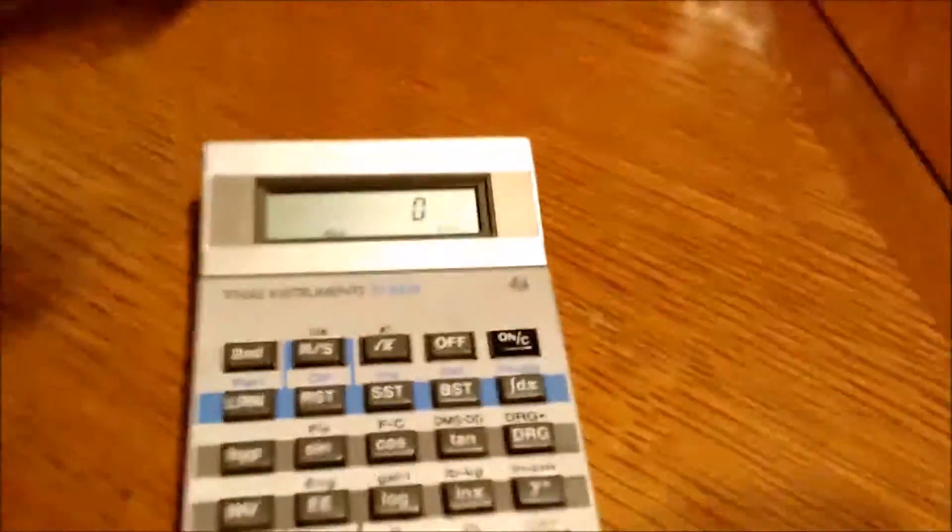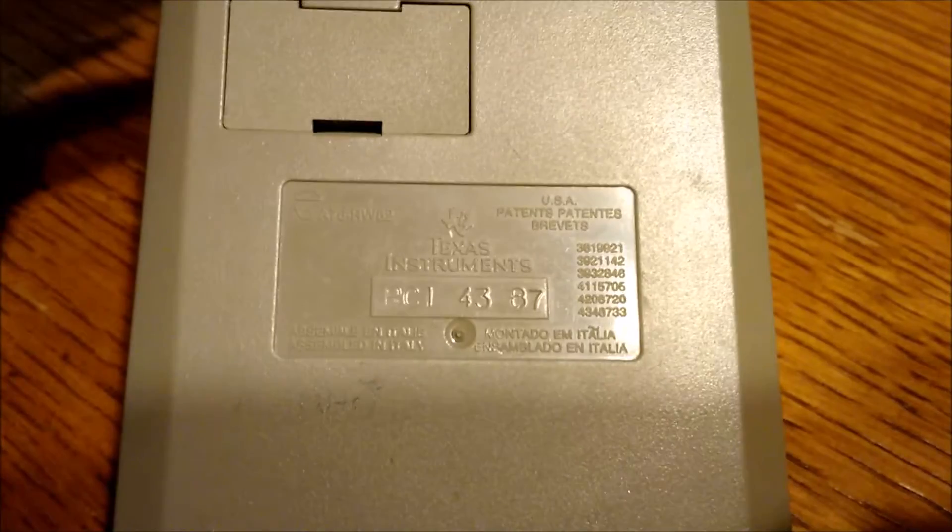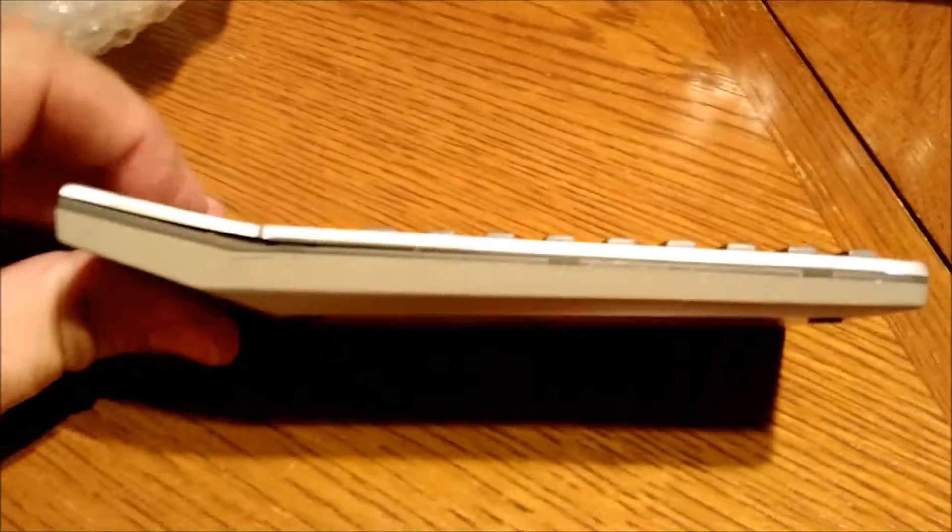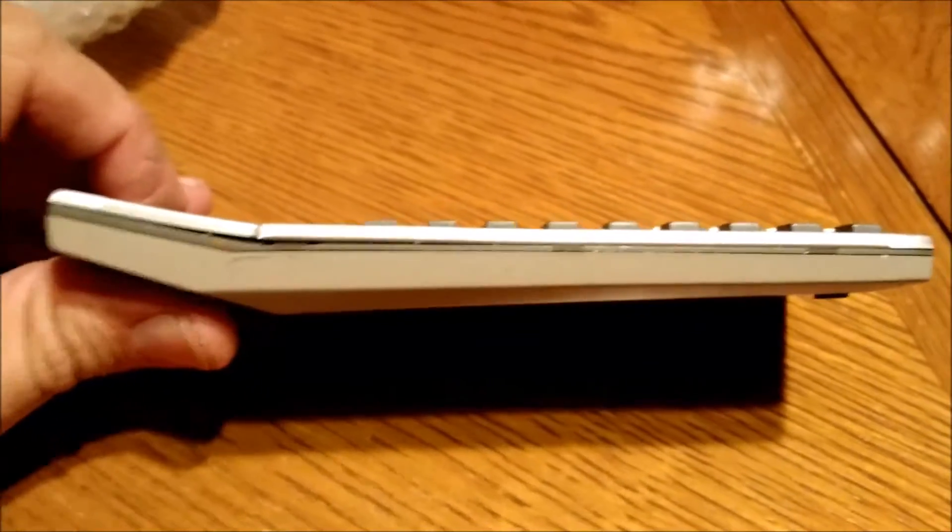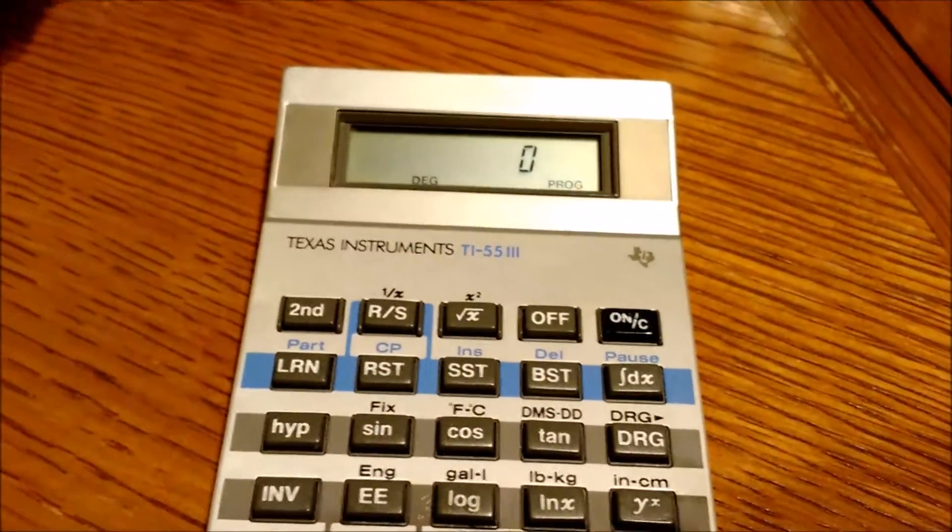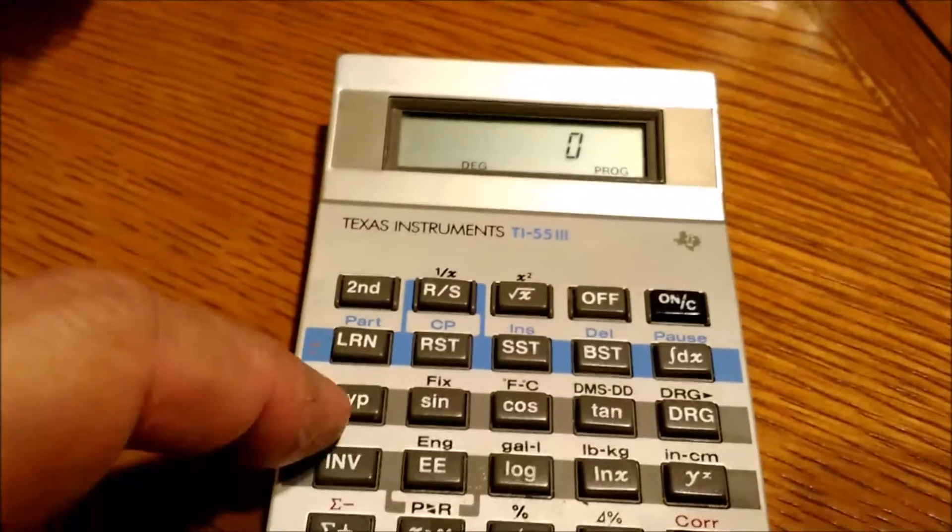Coming from the bubble wrap is the Texas Instruments TI-55-3. This is from the 80s. I think this particular calculator was manufactured in 1987. See the angle bevel for the screen? It is a programmable calculator. Not one with many steps in it. Pretty much minimal.